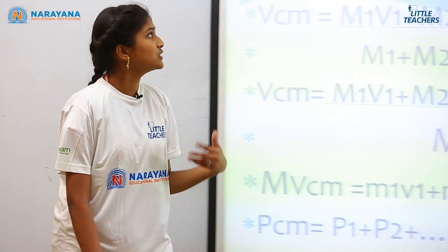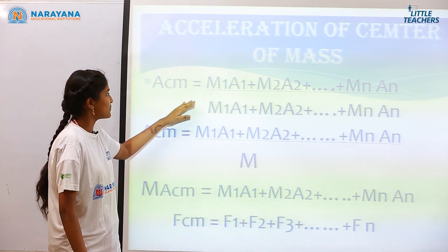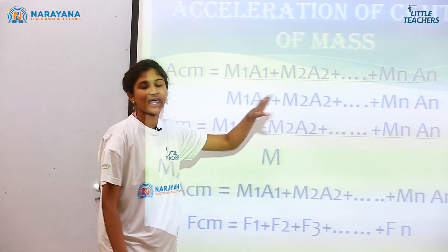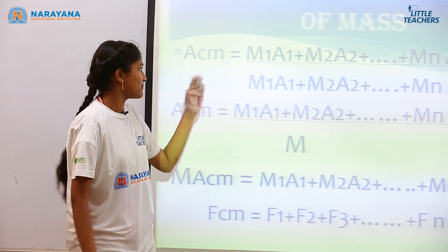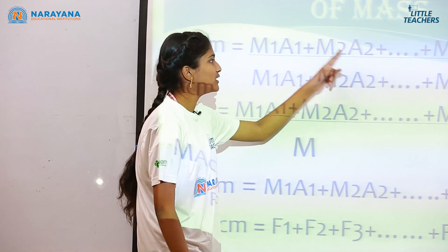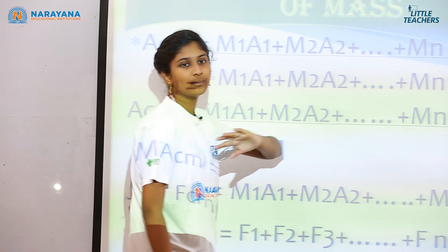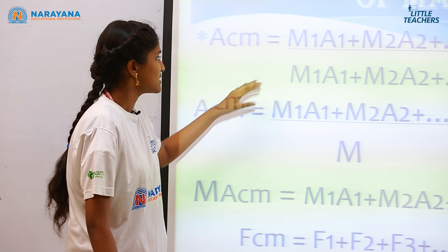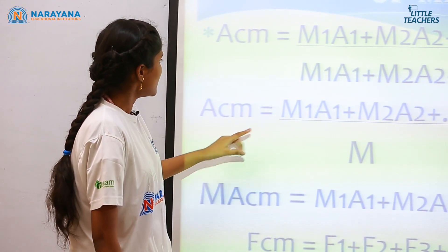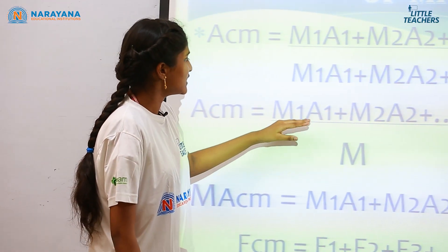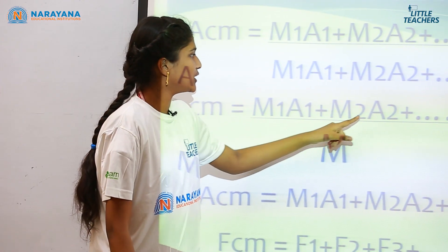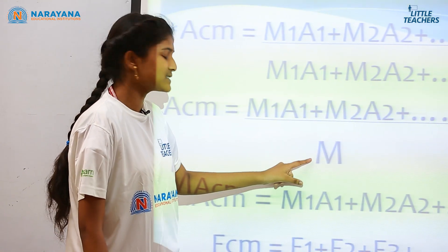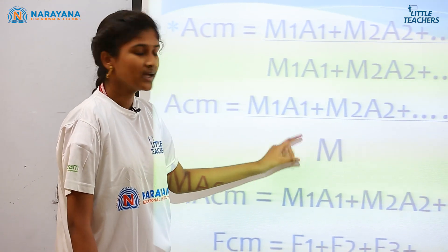Coming to the next topic: acceleration of centre of mass. We have m1, m2, and mn as the masses, and a1, a2, and so on for n number of accelerations. So the numerator is m1·a1 plus m2·a2 plus so on mn·an. The total masses are considered as M, the total mass.